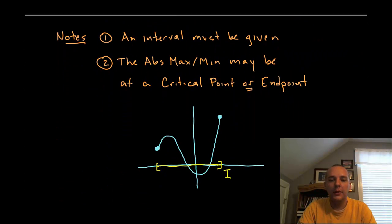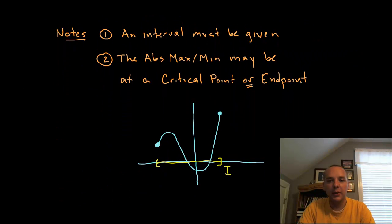Alright, a couple important things to notice about absolute extrema. These are some key things. The first of which we've already said, an interval has to be given if you're even going to define an absolute max or min. You should not ever be asked what the absolute max or min is of a function without them telling you where they want you to look. Now the second thing, and this is very important too, where are these absolute maxes and min? Where could they possibly occur?